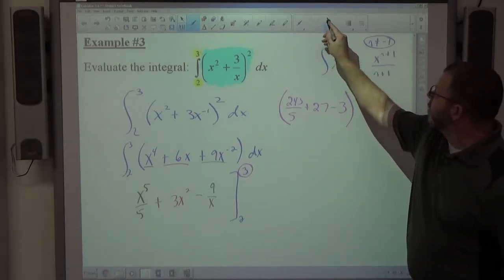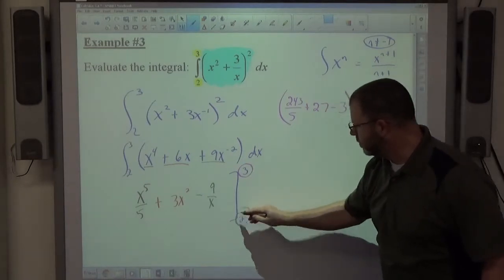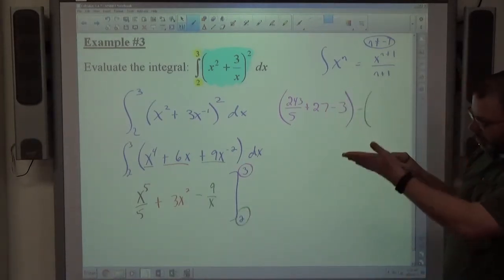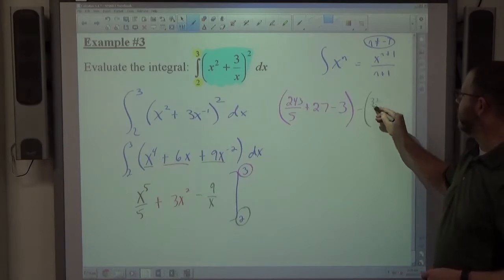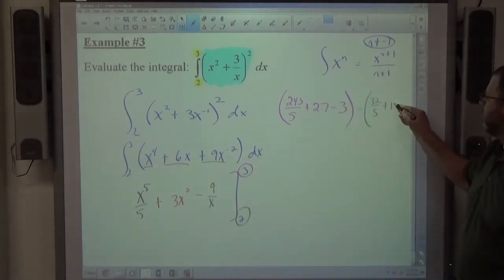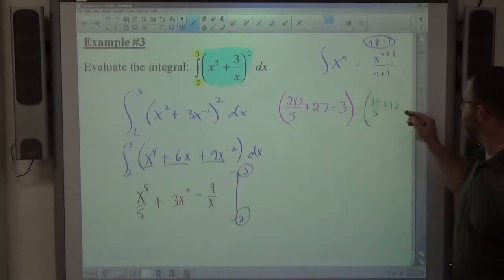If I put 2 in for each of those, and I'm going to subtract this one. 2 to the fifth power is 32, so 32 over 5. 2 squared is 4, times 3 is plus 12, and then 9 over 2 is just going to be minus 9 halves.